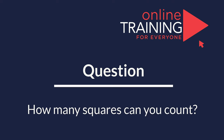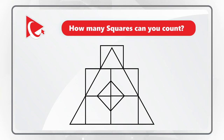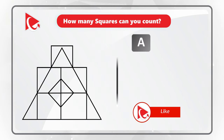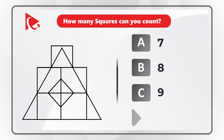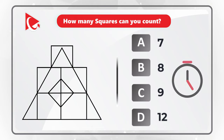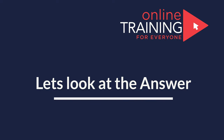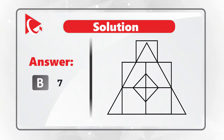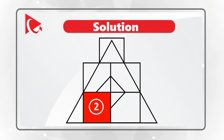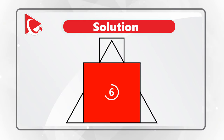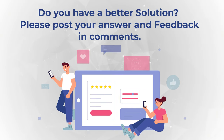Here's an interesting question where you need to correctly count the number of squares in the picture. Take a close look and select from one of the choices. Make sure to count inside and outside squares to get to the correct solution. I counted 7 squares in the picture — here they all are: 1, 2, 3, 4, 5, 6, and 7. If you have a different answer, please post your solution in comments.